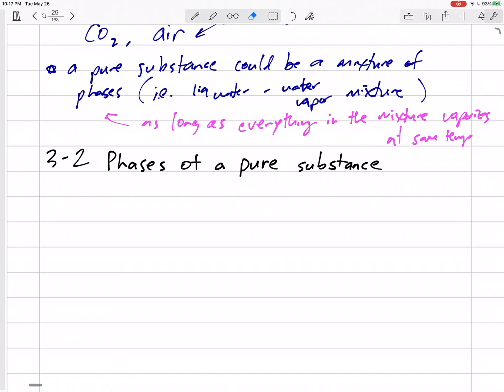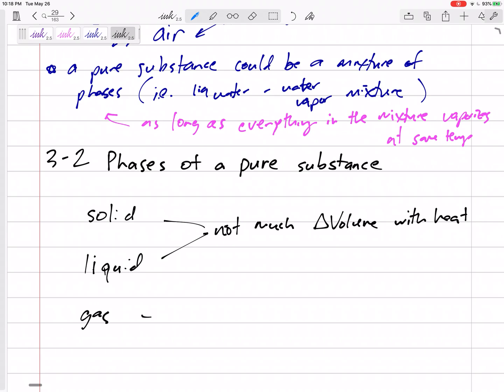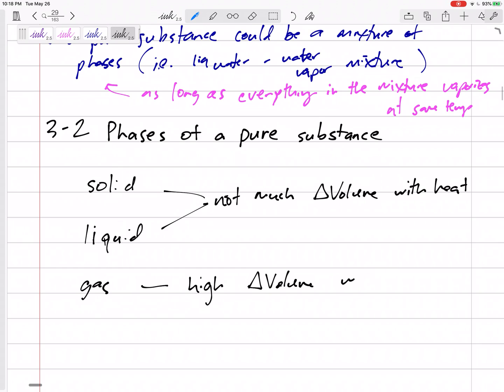Okay, obviously the phases of a pure substance would be solid, liquid, and gas. You know that, but we want to make a note that for solids and liquids there's not much change in volume with heat compared to a gas, very high change in volume, very large change in volume with heat.